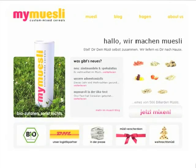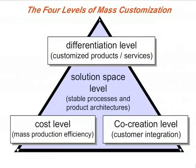How I define it: you differentiate yourself on the market by offering customized products, but you do this at the cost level that really allows mass production efficiency. So you don't charge a higher market segment price, but you can do it with prices that are comparable to standard goods. You are able to do it because you have a stable solution space.